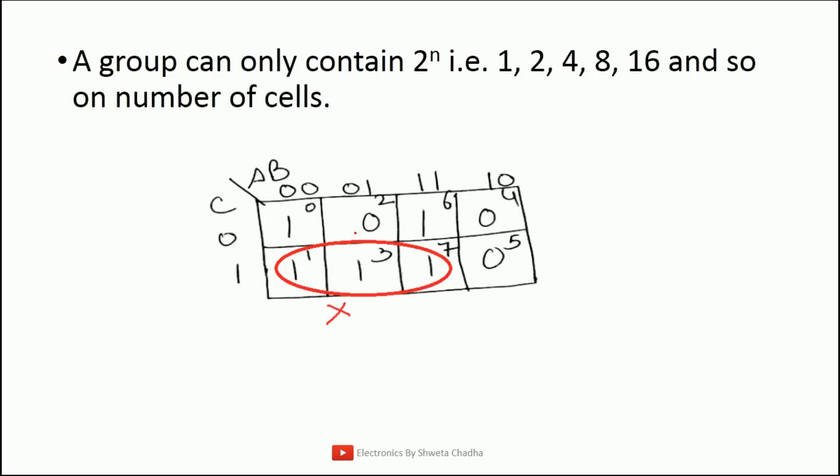This is very important: a group can only contain 2 raised to the power of n number of cells. That means we can have 2^0 = 1, 2^1 = 2, 2^2 = 4, 2^3 = 8, and so on. The groupings allowed are only 2^n values — that is 1, 2, 4, 8, 16, 32, etc. Do not go for any random even number. As you can see in this example, a group of 3 is visible, but that is not allowed because only 2^n number of cells are permitted while making any group in K-map simplification.